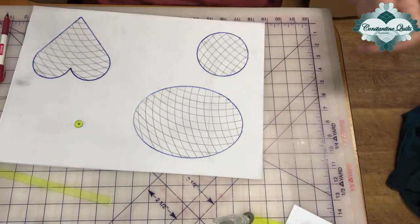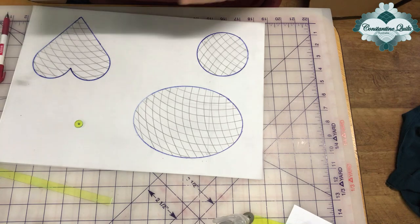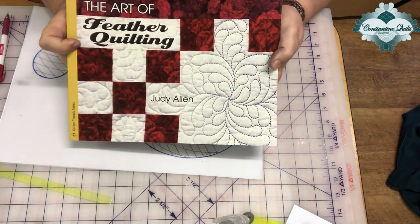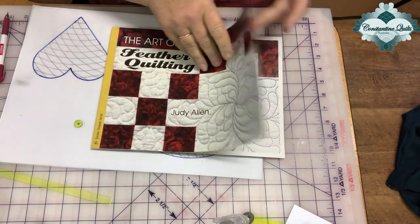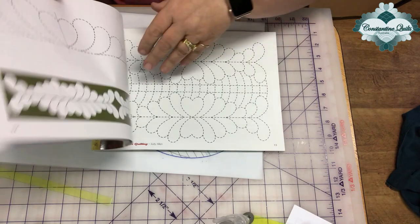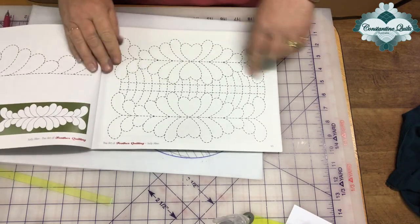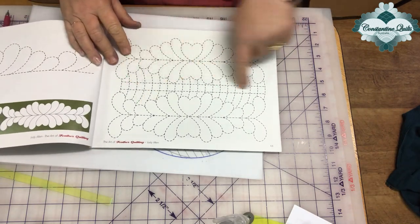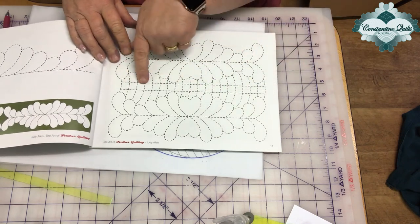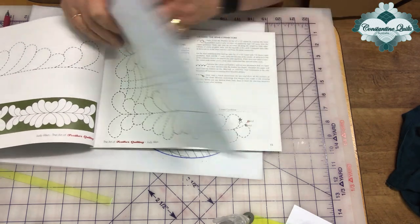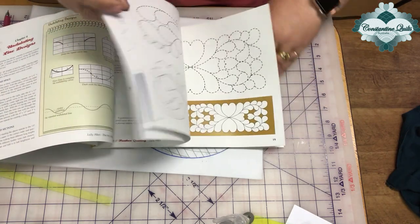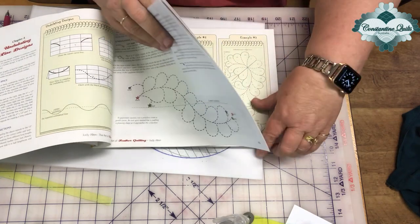Now to get some more inspiration, I do have about three of these books left, which is wonderful. The Art of Feather Quilting by Judy Allen. Now in here, Judy goes into some, gives you some more ideas. I do love the idea of curve cross hatching in between things and combined with the curves and the straight lines, which is really nice. It's a slightly different treatment.